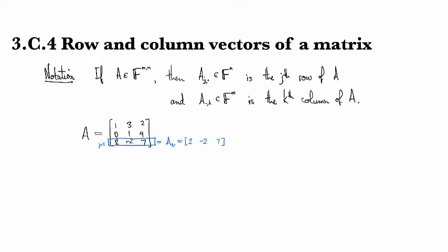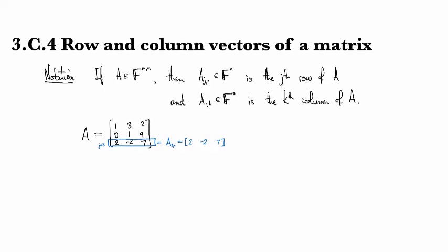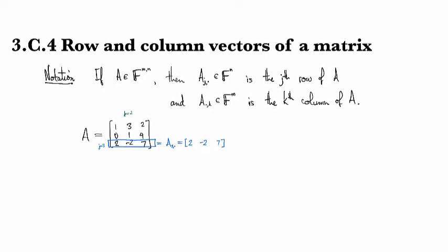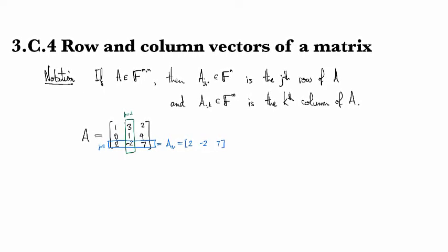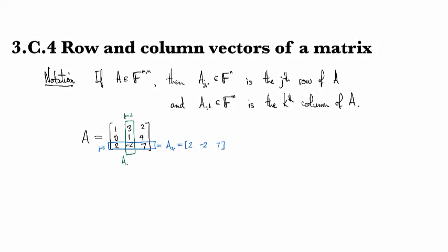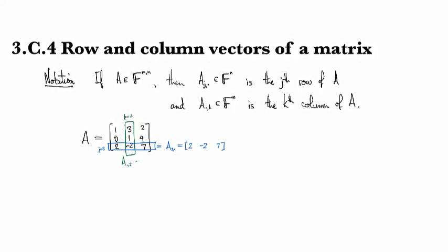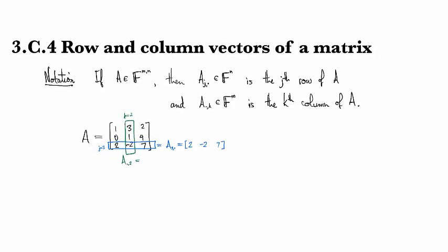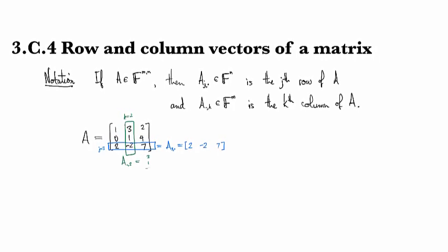And similarly, if we wanted to fix the column to 2 and snag this guy right here, then a_.,2 is going to be the column vector (3, 1, -2).